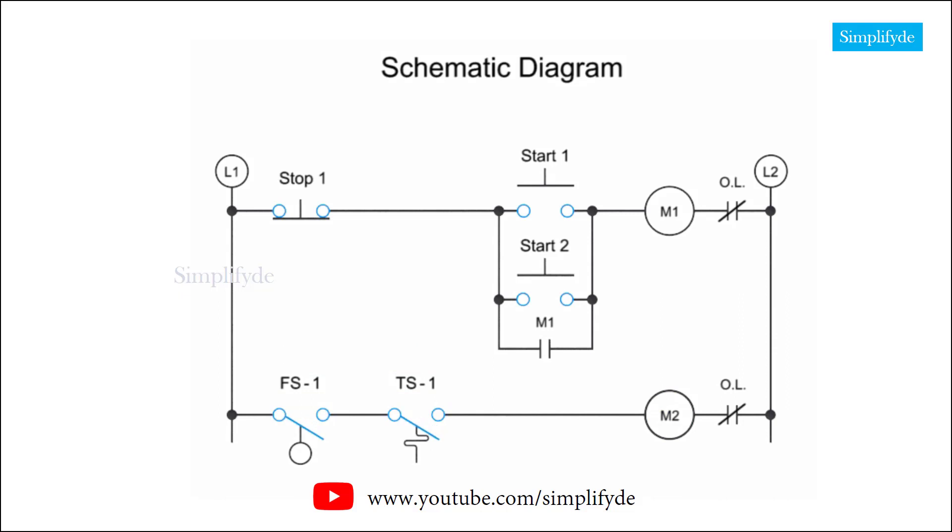Next, let's consider OR logic. This can occur when there are two normally open control functions connected in a parallel arrangement, represented here by two start push buttons. Thus, motor coil M1 can be energized by manually pressing start switch 1 or start switch 2.